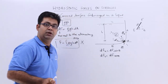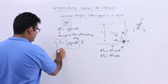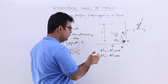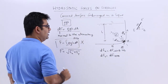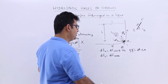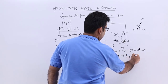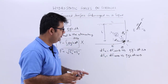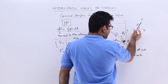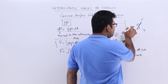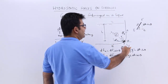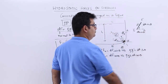We integrate these two components to find Fx and Fy, and the total force is then the square root of Fx squared plus Fy squared. Substituting dF equals rho g h dA, we get dFx equals rho g h dA sin theta and dFy equals rho g h dA cos theta. Since dA is at an angle theta to the horizontal, its projection onto a vertical plane is dA sin theta and its projection onto a horizontal plane is dA cos theta.